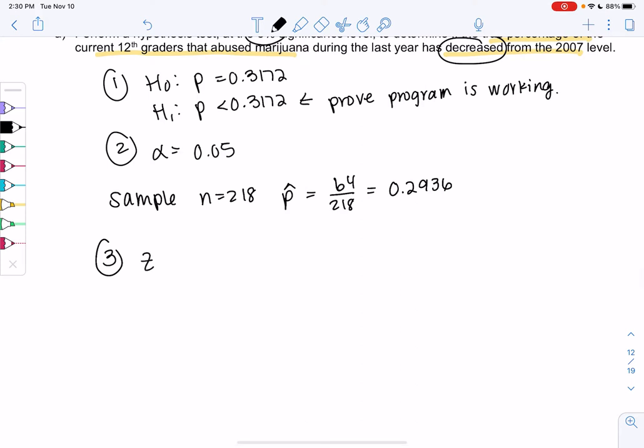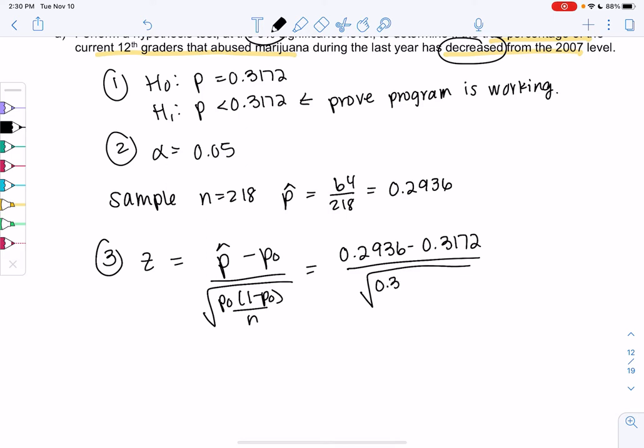So let's find the Z-score. We'll take P hat minus P0, so 0.2936 minus 0.3172, all over the square root of P0, 1 minus P0 over n. So 0.3172, 1 minus 0.3172, all over 218, and then all of that's in a square root.